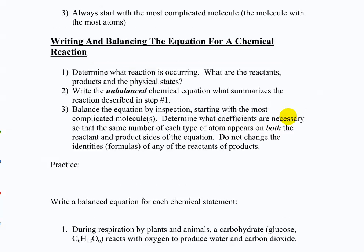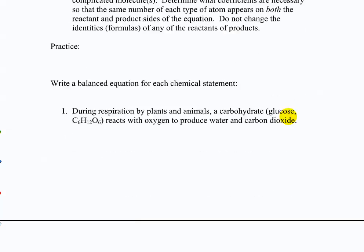When you get a chemical reaction and you want to express it through a chemical equation, here's what you do. You determine the reaction that's occurring - what are the reactants' products? What are their physical states? You write an unbalanced equation, and then you balance it. So here's some practice. During respiration by plants and animals, a carbohydrate, glucose C6H12O6, reacts with oxygen to produce water and carbon dioxide. So what are the reactants? Glucose and oxygen.